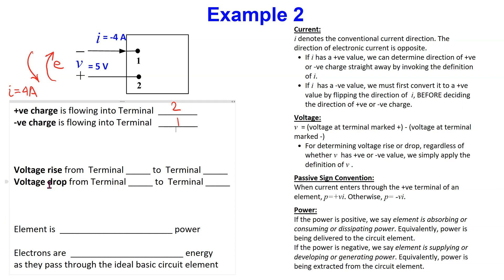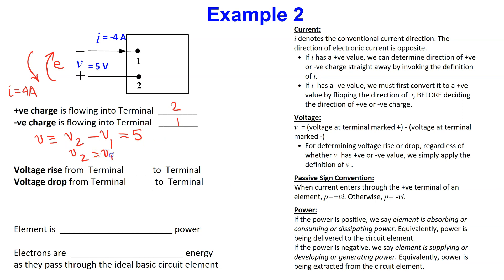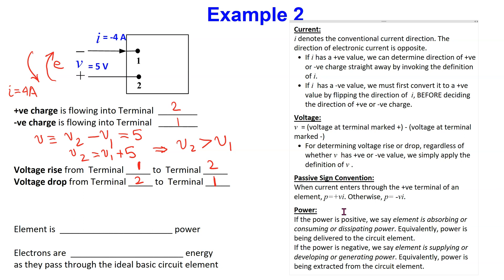To determine the voltage rise and drop, we invoke the definition of V. V is defined as the voltage at the terminal marked plus, which is terminal 2 in this case, minus the voltage at the terminal marked minus, which is terminal 1. This has a value of 5 volts. Rearranging, V2 equals V1 plus 5, which implies voltage at terminal 2 is greater than voltage at terminal 1. Therefore, there is a voltage rise going from terminal 1 to 2, and a voltage drop going from terminal 2 to terminal 1.